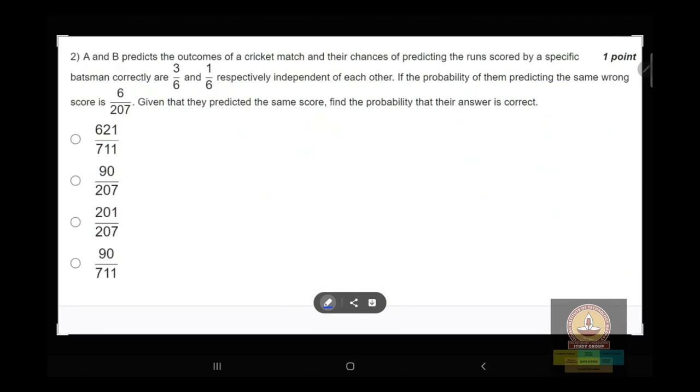A and B predict the outcome of a cricket match and their chances of predicting the run scored by a specific batsman correctly are 3/6 and 1/6 respectively, independent of each other. If the probability of them predicting the same wrong score is 6/207...